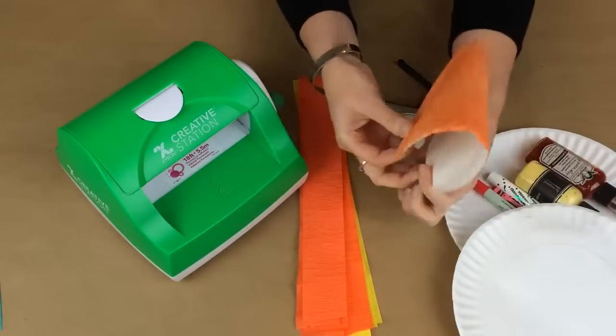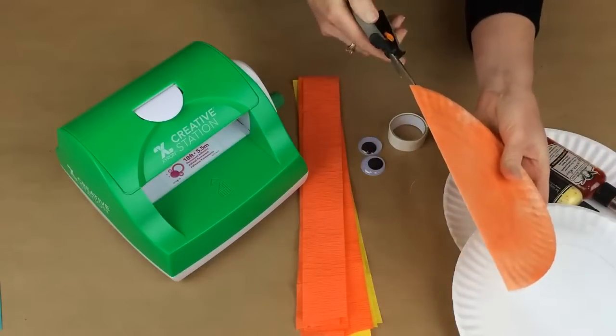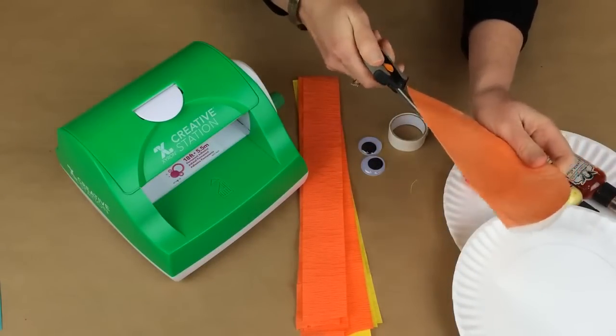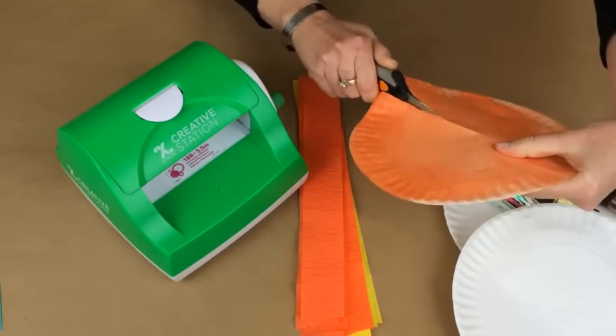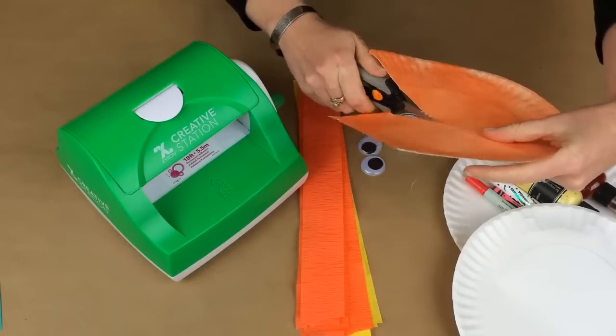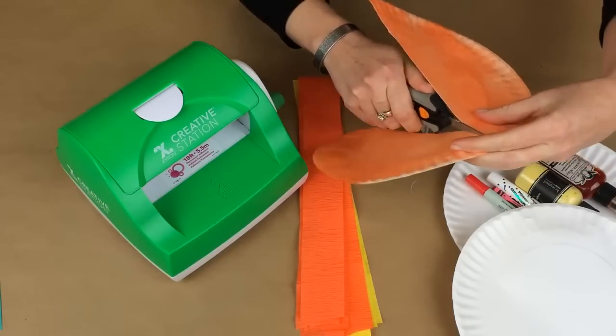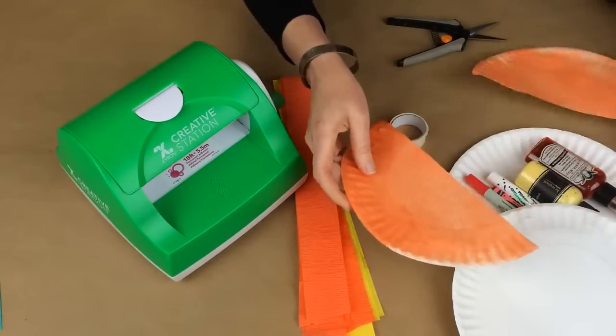you're going to fold it in half and take your pair of scissors. You could also do this with a trimmer if you have a trimmer at home. I'm just going to take my scissors and cut this in half. And it does not have to be exactly even because you're going to be covering the edges with your crepe paper. Then you're going to set one piece aside.